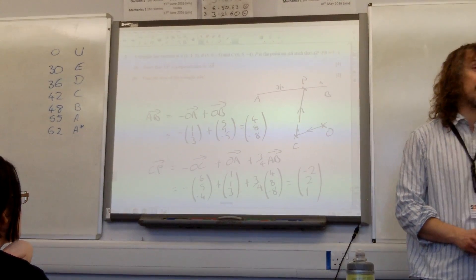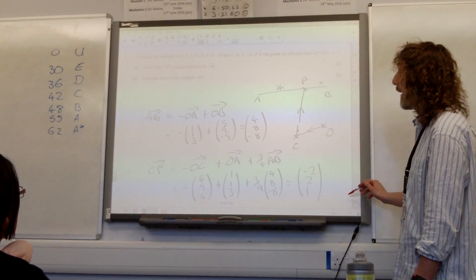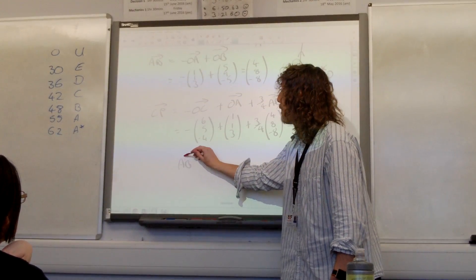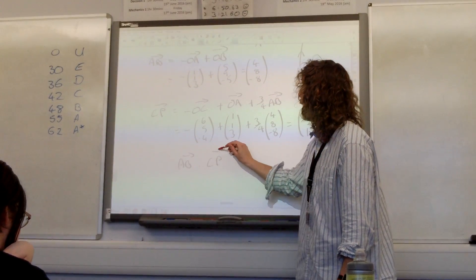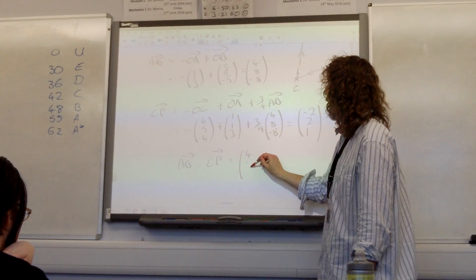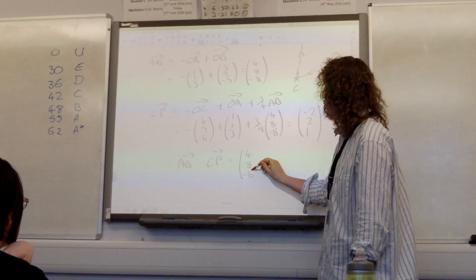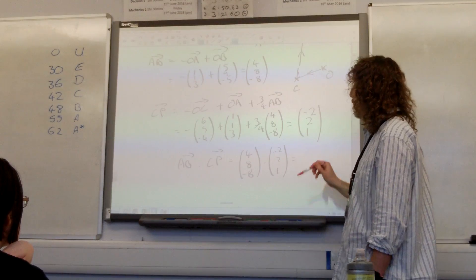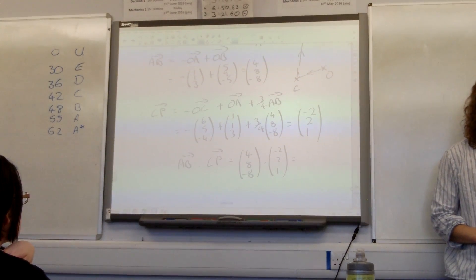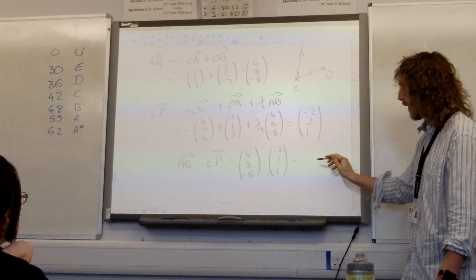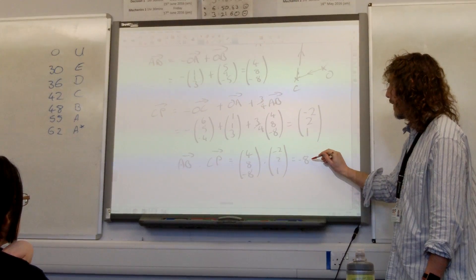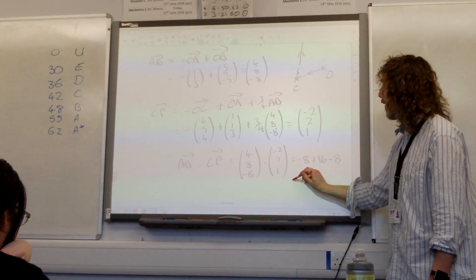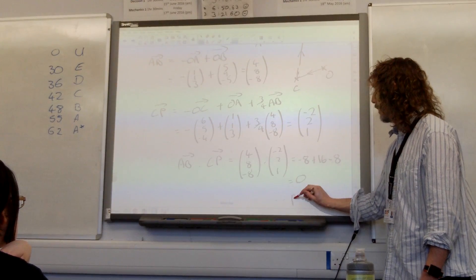The question says show that AB and CP are perpendicular. We do that by computing AB dotted with CP. So that is (4,8,-8) dotted with (-2,2,1), which gives minus 8 plus 16 minus 8, which equals 0 — therefore perpendicular.